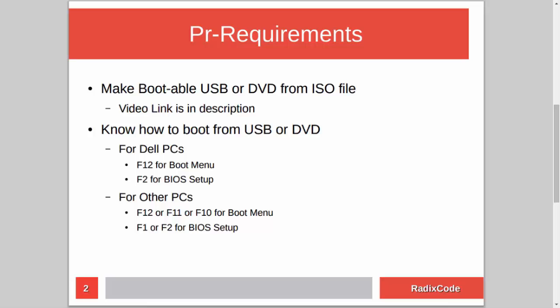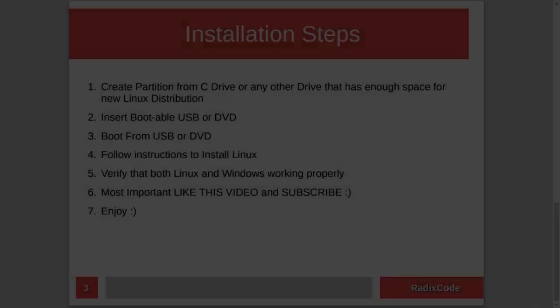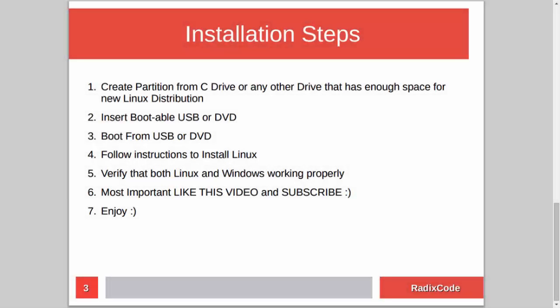The installation steps are very simple. First, we need to create an empty partition for our Linux distribution from the C drive or any other drive that has enough space. After this, we insert our DVD or USB drive, restart the computer, boot from USB or DVD, and then install our Linux distribution.